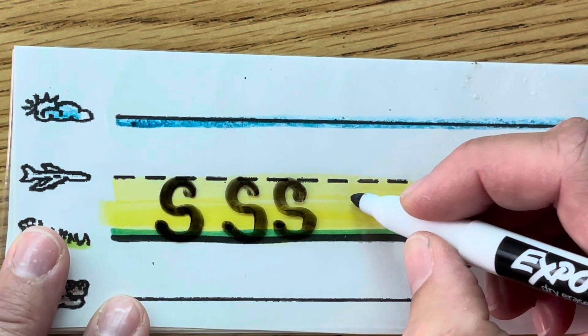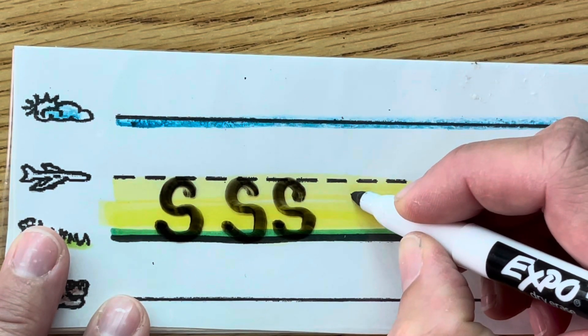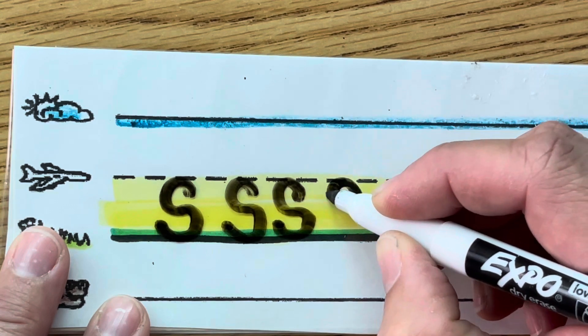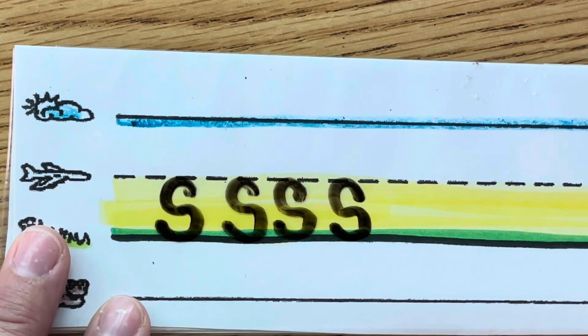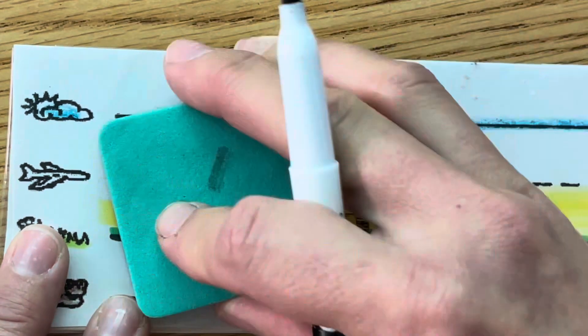Do another one. Right under the dots. Little magic C. Over and around the other way. S. Wipe off those S's.